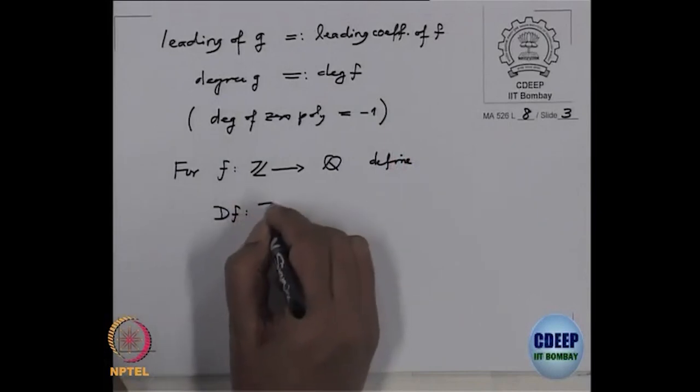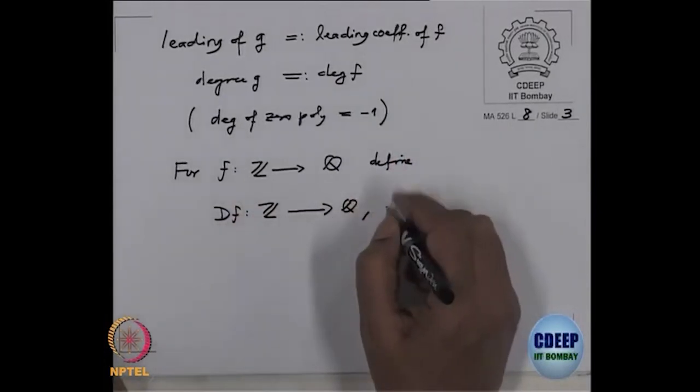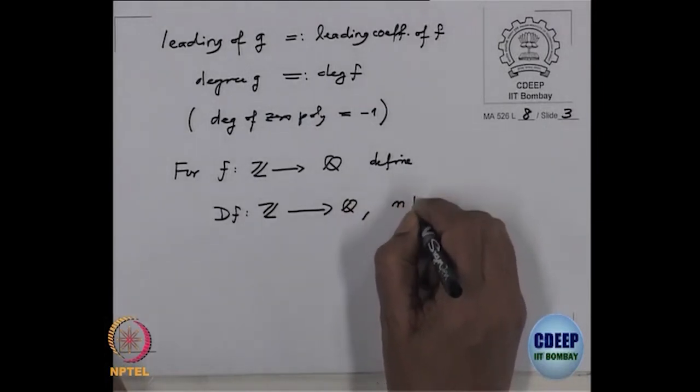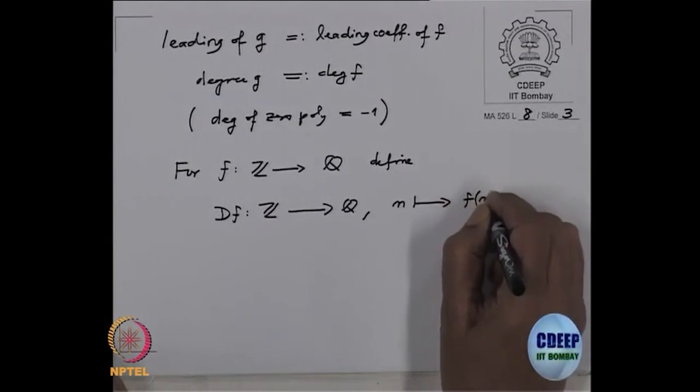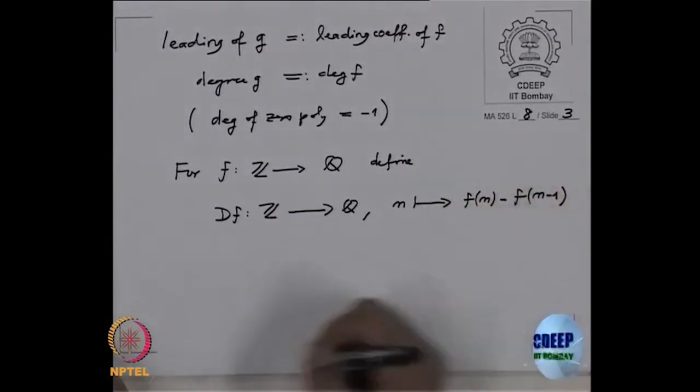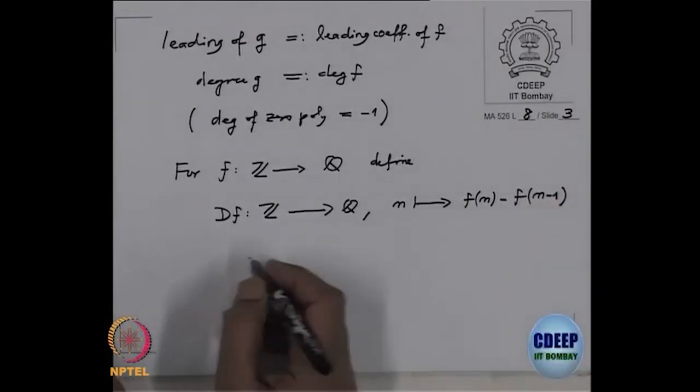Now, how do we decide whether a numerical function is a polynomial function? For that we define a new function — something like a derivative. For a numerical function f, define Δf, also a map from Z to Q, by Δf(n) = f(n) − f(n − 1). This is a new function, and now we will prove a simple lemma.